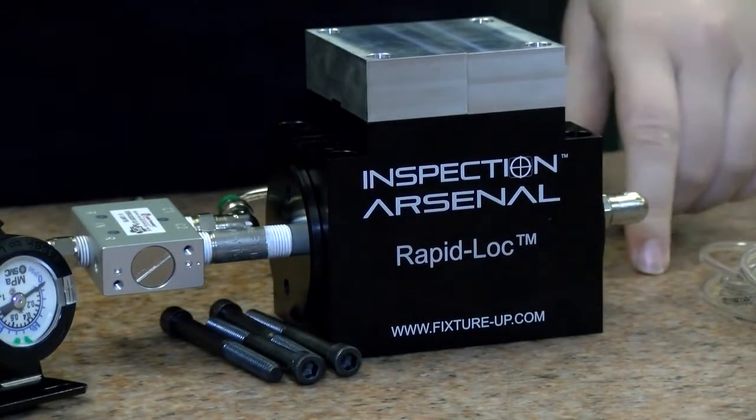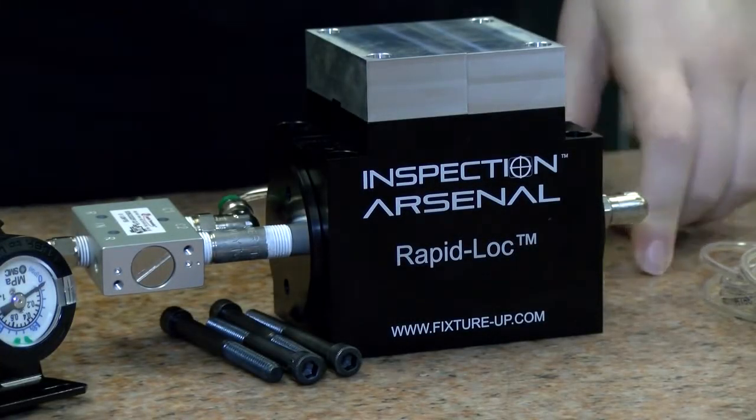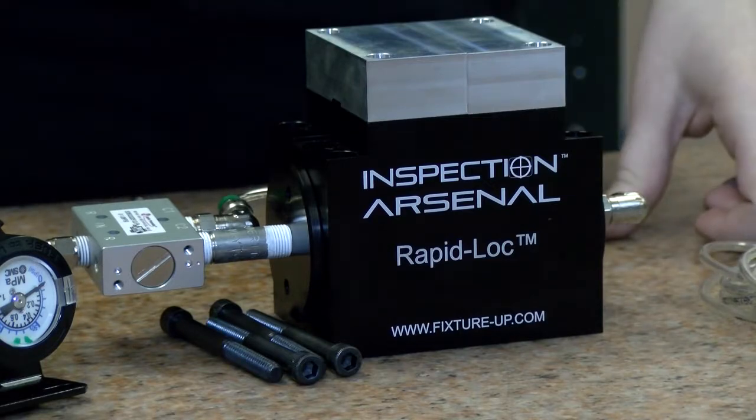When you get your RapidLock vise system, it will need some assembly. First, take your vise out of the box and make sure you have all the pieces.